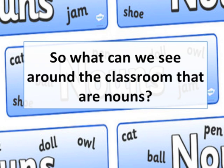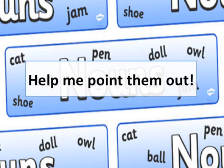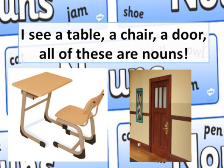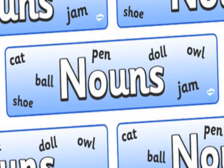So what can we see around the classroom that are nouns? Help me point them out. I see a table, a chair, a door — all of these are nouns. Oh, I get it. So what about my name, Tani?